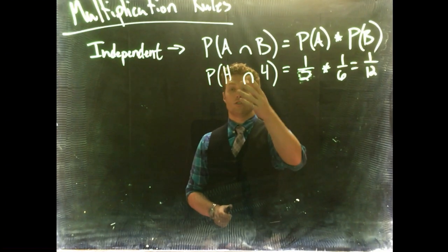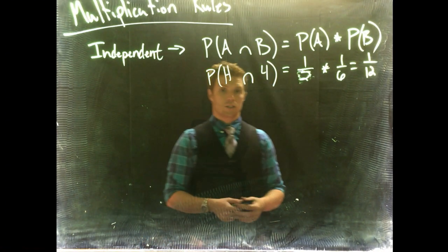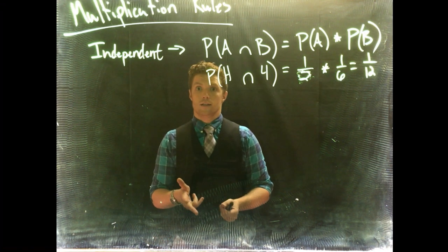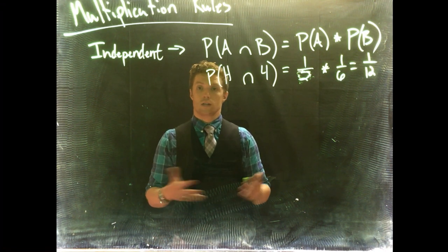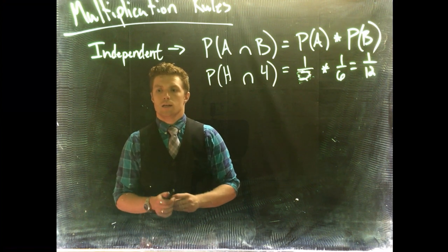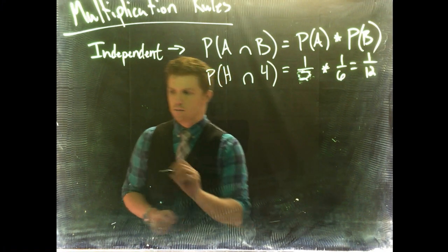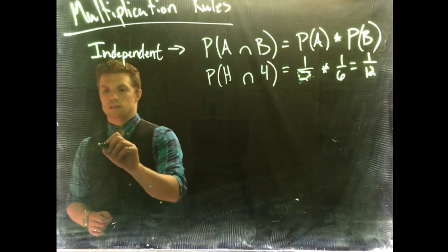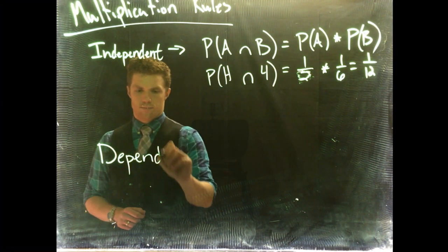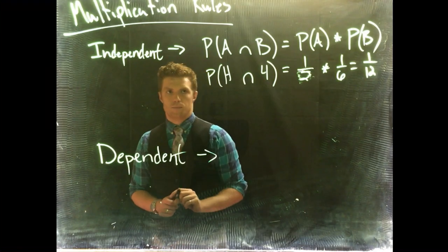For independent events, we can multiply them together, and it doesn't have to be just two events. We can multiply three, four, or five — for example, flip a coin, roll a die, and draw a card. Each of those is independent from one another, and we could just multiply all the probabilities together.